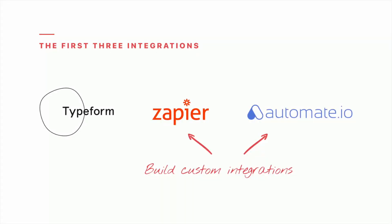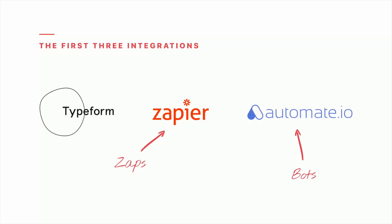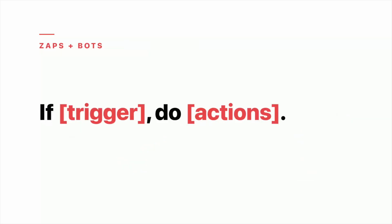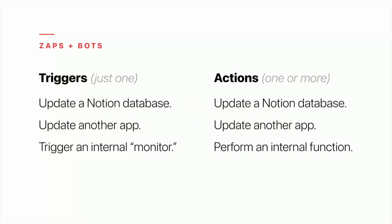Note that if you have a multiple choice question that maps to a select or multi-select property in Notion, you'll want to make sure those options are pre-configured within the Notion database. With each Typeform question mapped to its corresponding property, click Save Mapping and the integration is finalized. When submissions are made using the form, they'll appear within that database.